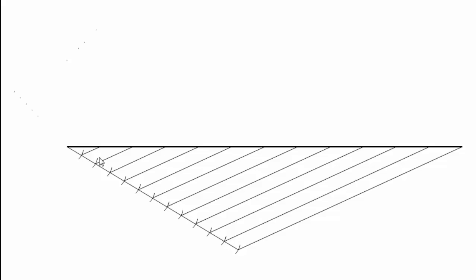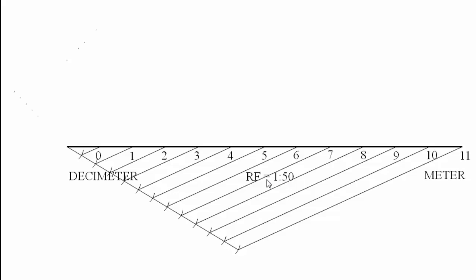At the end of the first division, place a zero, and to the right label 1, 2, 3, 4, and so on until 11. To the right of zero we have the main unit — meters. Towards the left of zero, the immediate smaller unit to meters is decimeters.